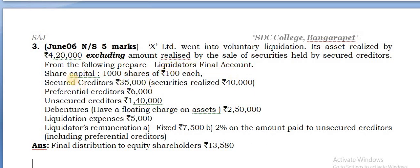From the following, prepare the liquidator's final account. Share capital is given - 1,000 shares of rupees 100 each. Secured creditors are given 35,000 and securities realized is 40,000, so in this case securities are realizing more.